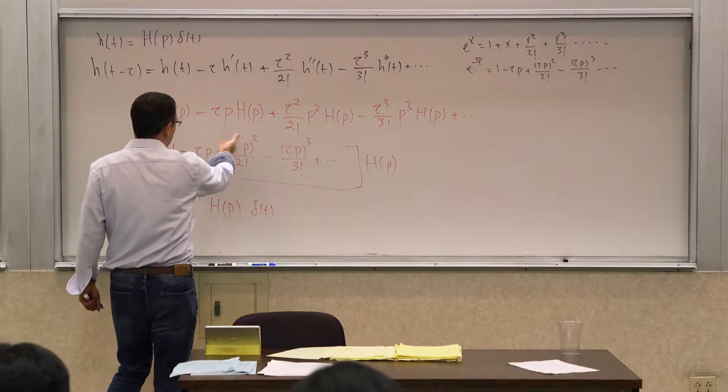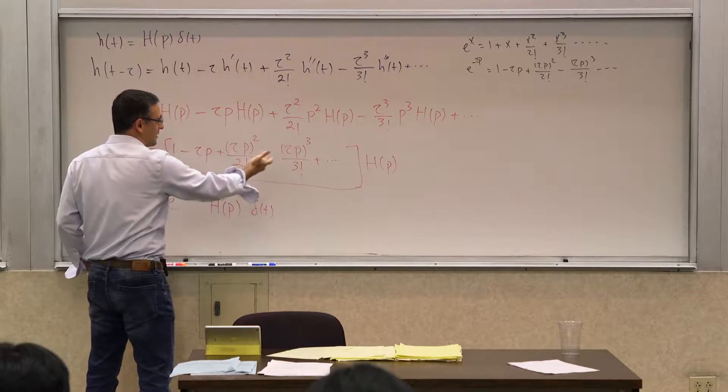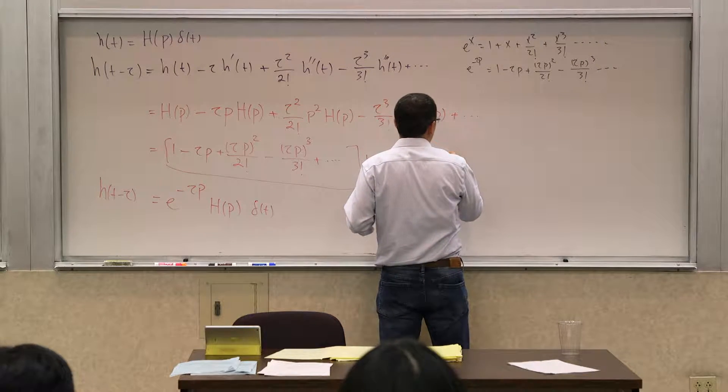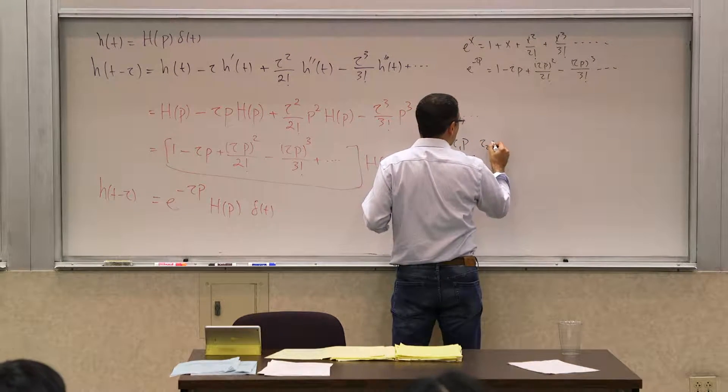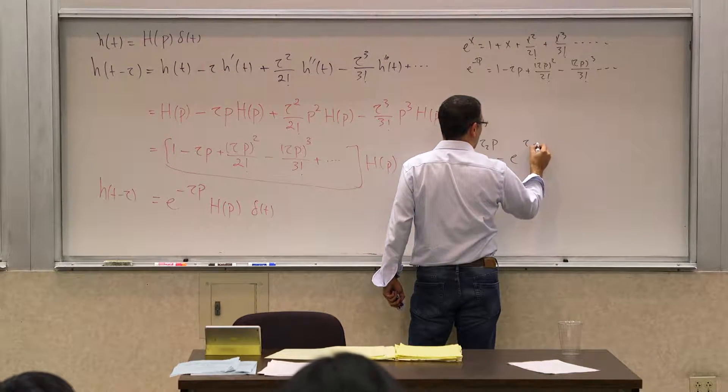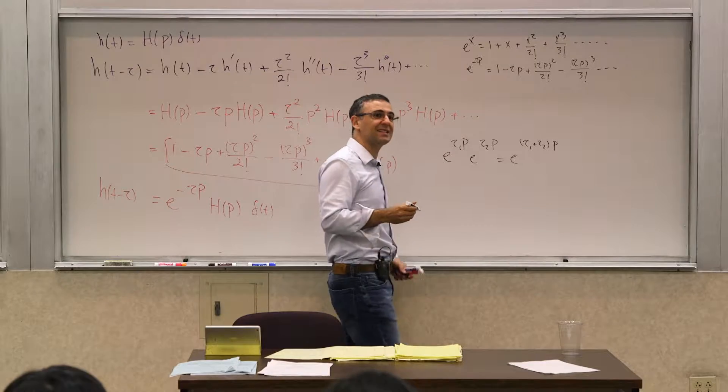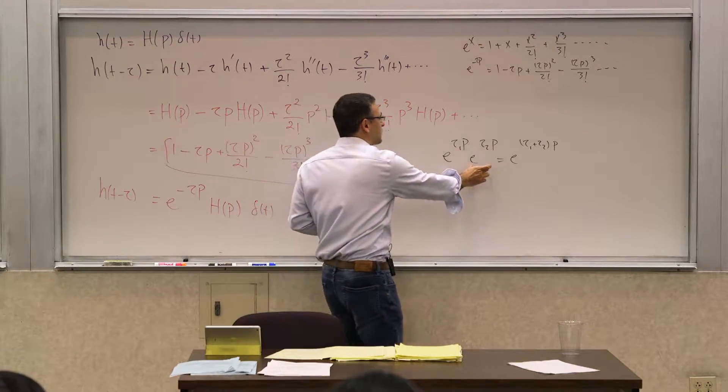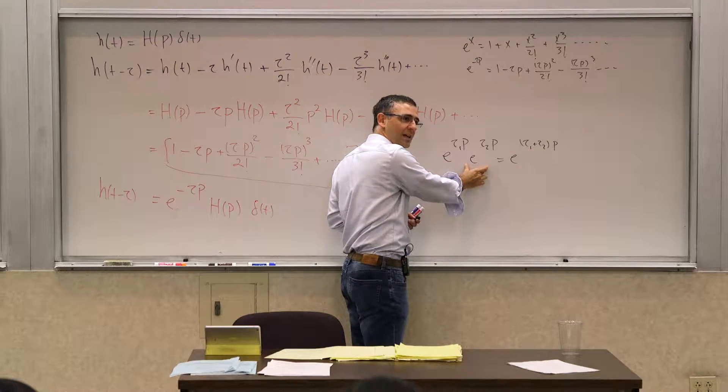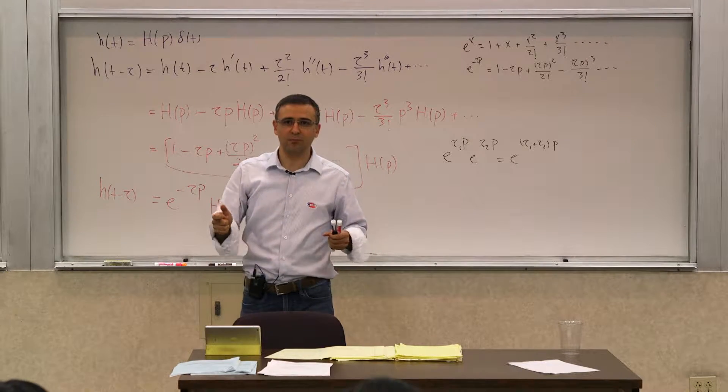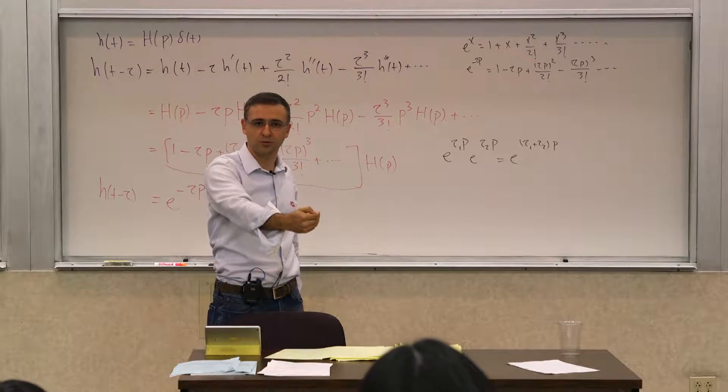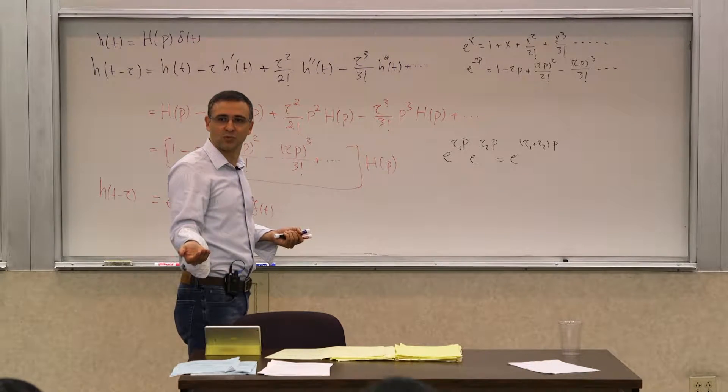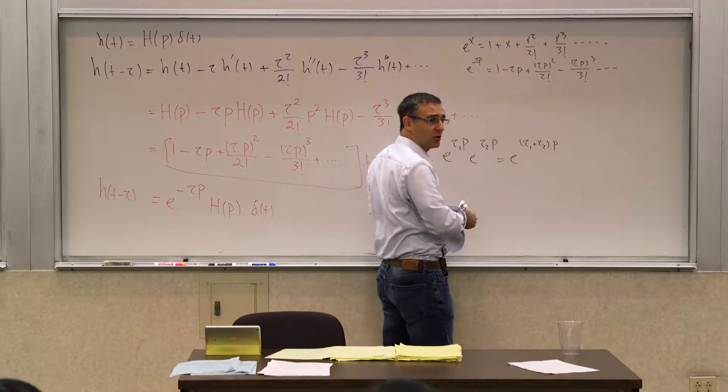Now, this exponential is an exponential because this is basically just writing it as a sum of polynomials. It also has the properties of exponential. You can explicitly, for example, show that e to the tau 1 p, e to the tau 2 p equals e to the tau 1 plus tau 2 p, which makes sense if this were a delay.